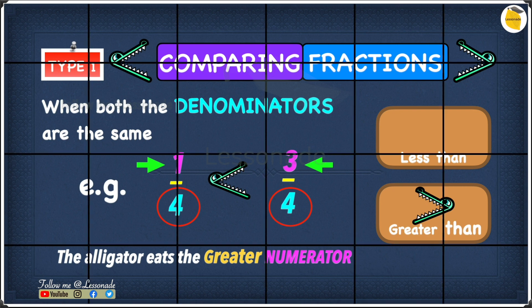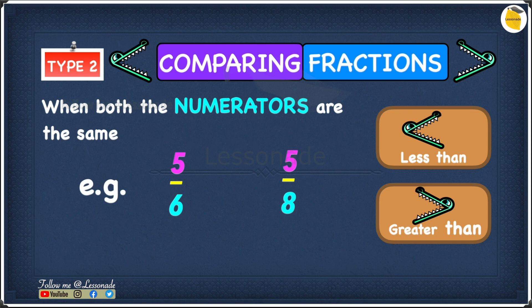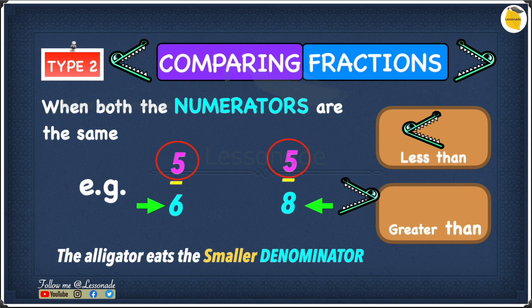Type two is comparing fractions when both numerators are the same. The example is five over six and five over eight. The numerator is the number at the top — in five over six we have five, and in five over eight we also have five. Since the numerators are the same, you look at the denominators — six and eight — and find the smaller one, which is six. The alligator eats the smaller denominator, so five over six is greater than five over eight.